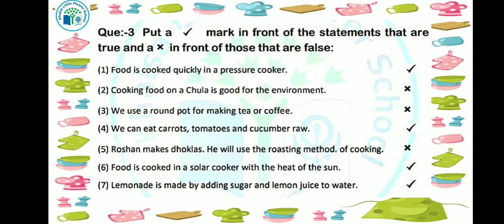Our next topic is true or false. First question: food is cooked quickly in a pressure cooker. If any food is to be made quickly, you can cook it in a pressure cooker. So this sentence is true.